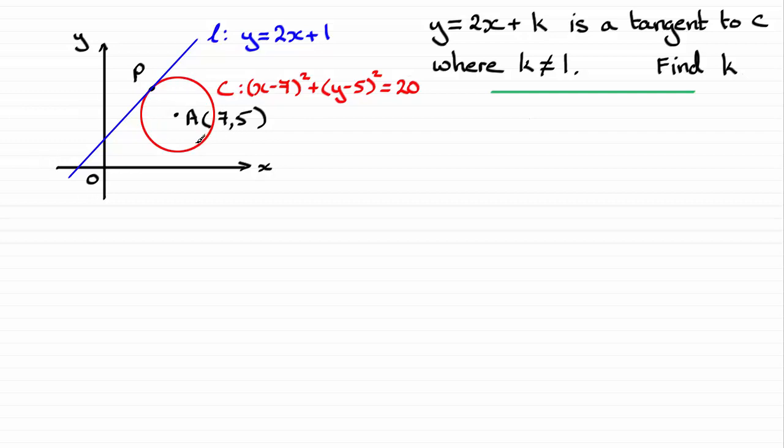This is not a method that I would want to use in a question like this as it's quite lengthy, but nonetheless it's a useful exercise. What I'm going to be doing is substituting 2x plus k for y into the equation of a circle to find out what the corresponding x value will be.